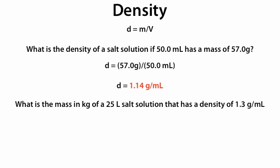What is the mass in kilograms of a 25 liter salt solution that has a density of 1.3 grams per milliliter? We've said that density is equal to mass over volume. So we set our density, which is 1.3 grams per milliliter, equal to the mass of the salt solution divided by the volume.